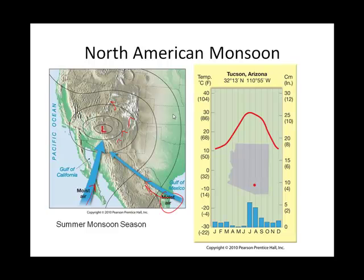These bars are showing precipitation amounts. Notice that June, July, August, and September show very high rainfall — check out the rainfall. So again, it's very much seasonal.